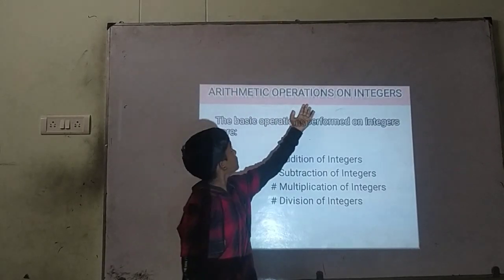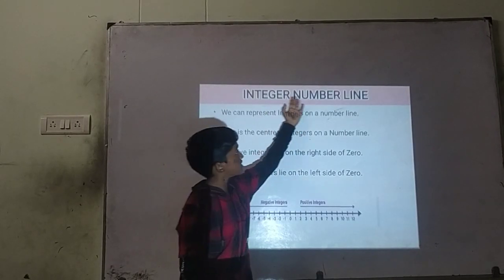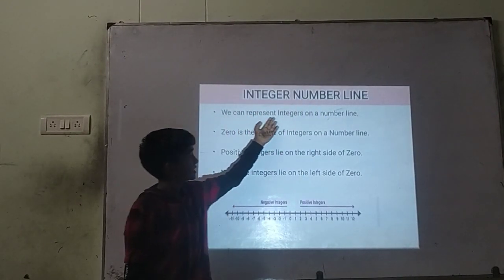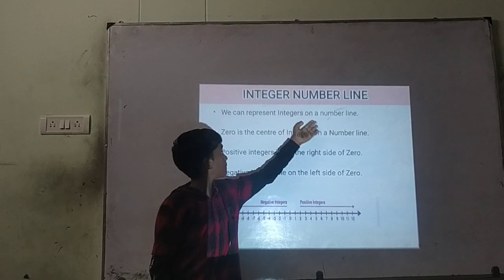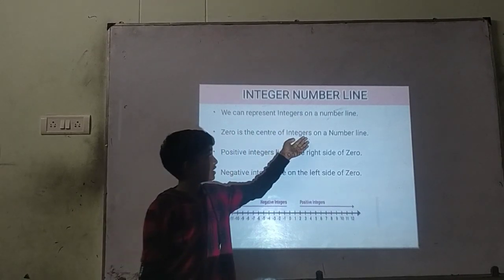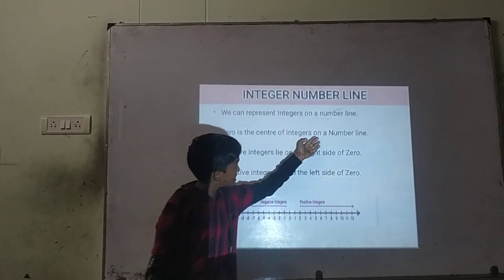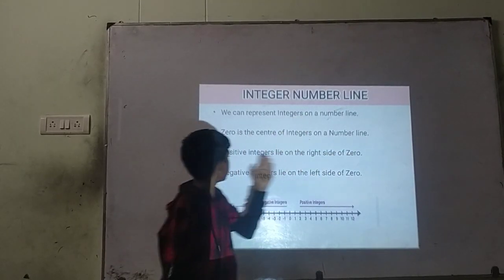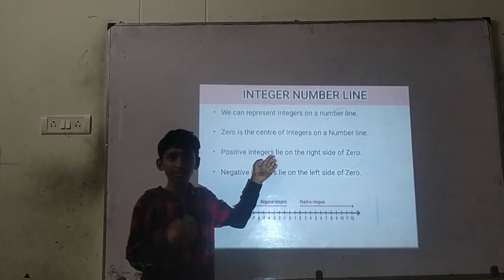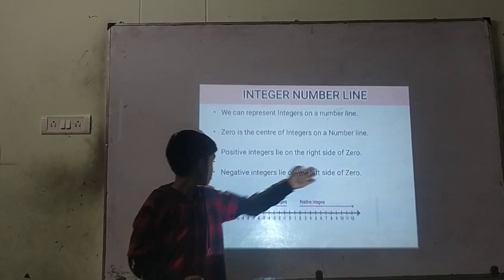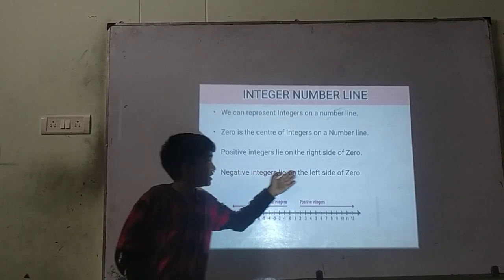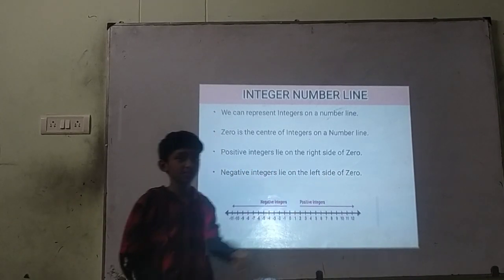Integer on number line. We can represent an integer on a number line. 0 is the center of the integer on a number line. Positive integers lie on the right side of 0 and negative integers lie on the left side of 0.